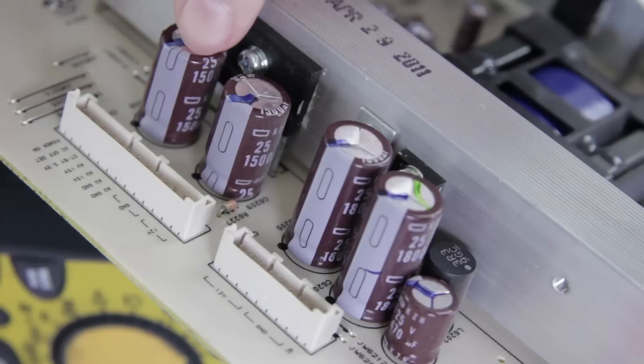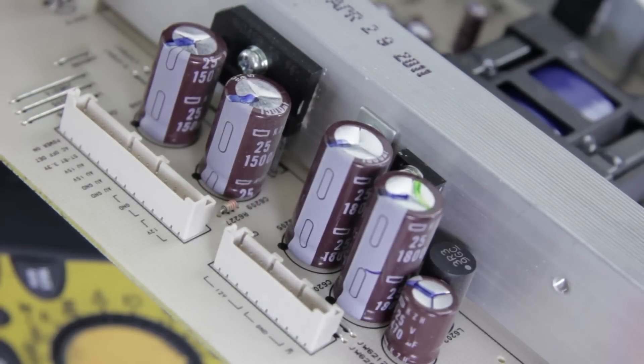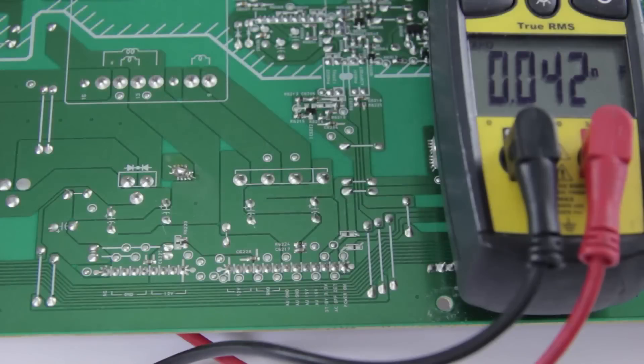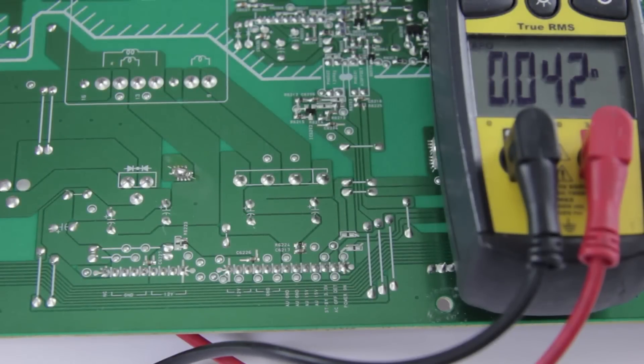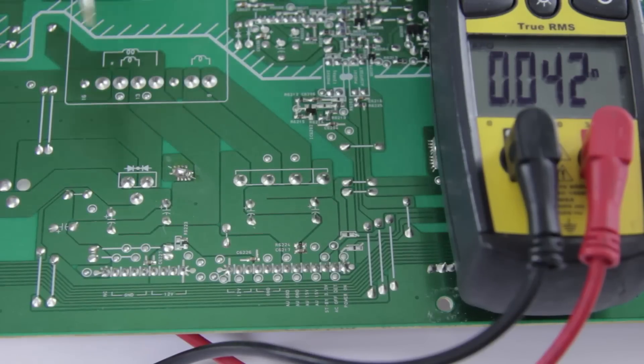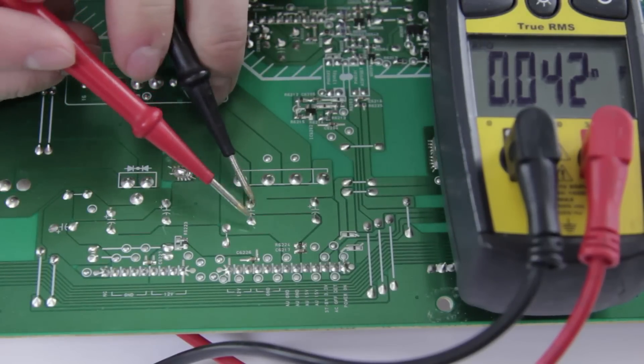So right here we have these two 1500 microfarad caps. I'm going to flip it over and I'm going to try and read the value for one of the caps. Okay so we have our multimeter here and we've got it set in capacitance mode. We're going to try and measure the value of one of the caps. We're going to take our probes and put one on each lead.